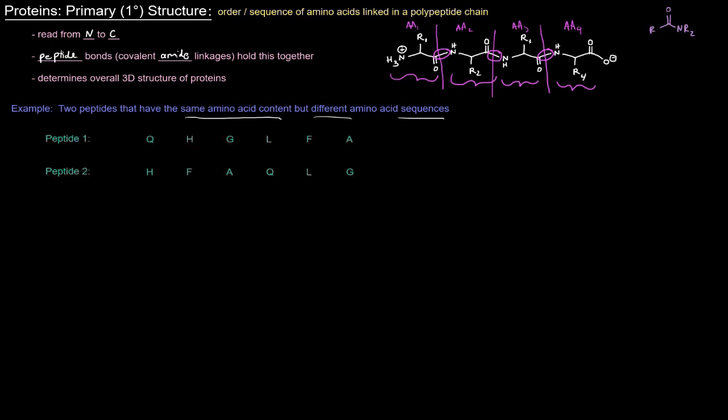So peptide one, QHGLFA. So Q, glutamine, H, histidine, G, glycine, L, leucine, F, phenylalanine, A, alanine. And so over to the left, this would be the amino acid that is on the amino terminus. And then over here, to the right, we have alanine, the carboxy terminal amino acid.